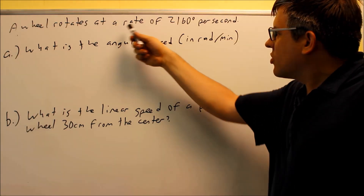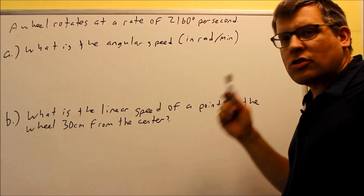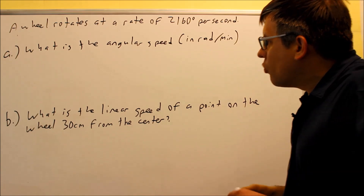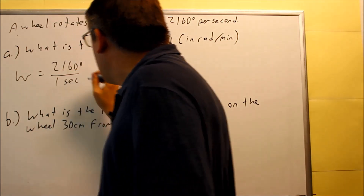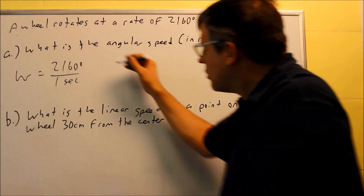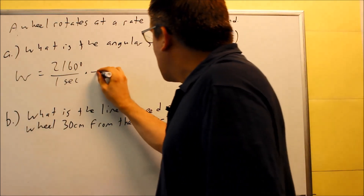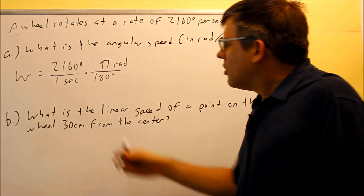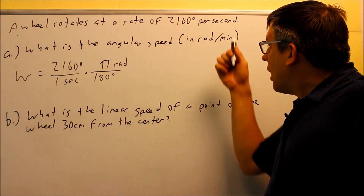Next problem: a wheel rotates at 2160 degrees per second, and we want angular speed in radians per minute. This time we need to change two things: convert degrees to radians, and seconds to minutes. Starting with omega as 2160 degrees per one second, we use dimensional analysis. To cancel degrees, we put 180 degrees on the bottom and pi radians on top, converting to radians per second.